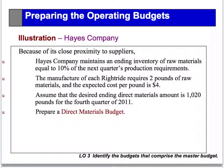For example, the management of Hayes Company wants to maintain an inventory of raw materials of 10% of what we need in the next quarter's production. The manufacture of this product requires two pounds of raw material for each unit produced, and the cost per pound is $4. Assume that the desired ending direct material inventory amounted to $1,020 for the fourth quarter of 2011. Prepare a direct material budget for 2012.